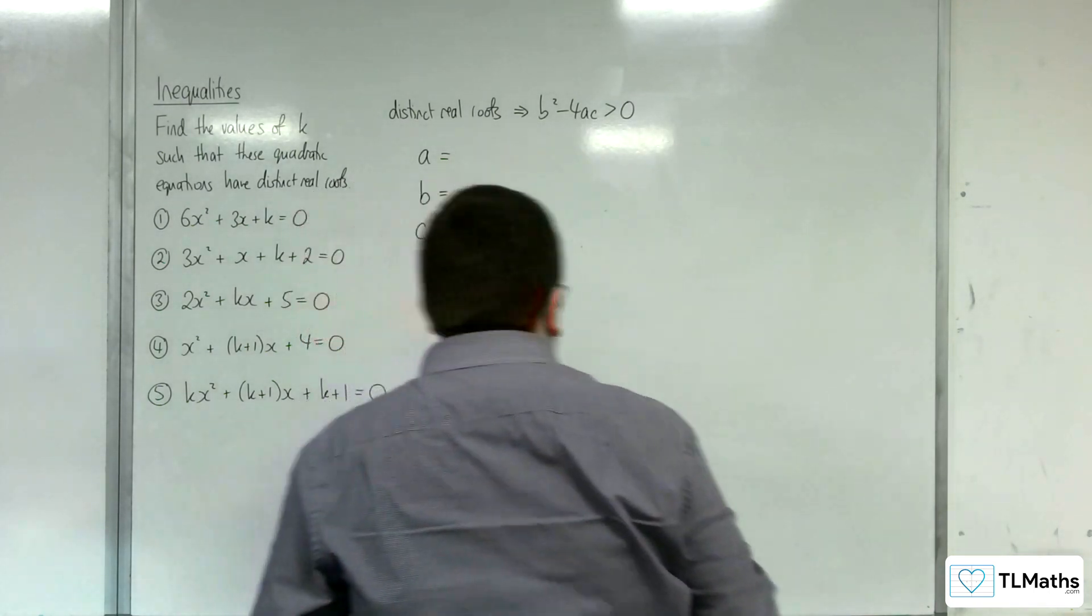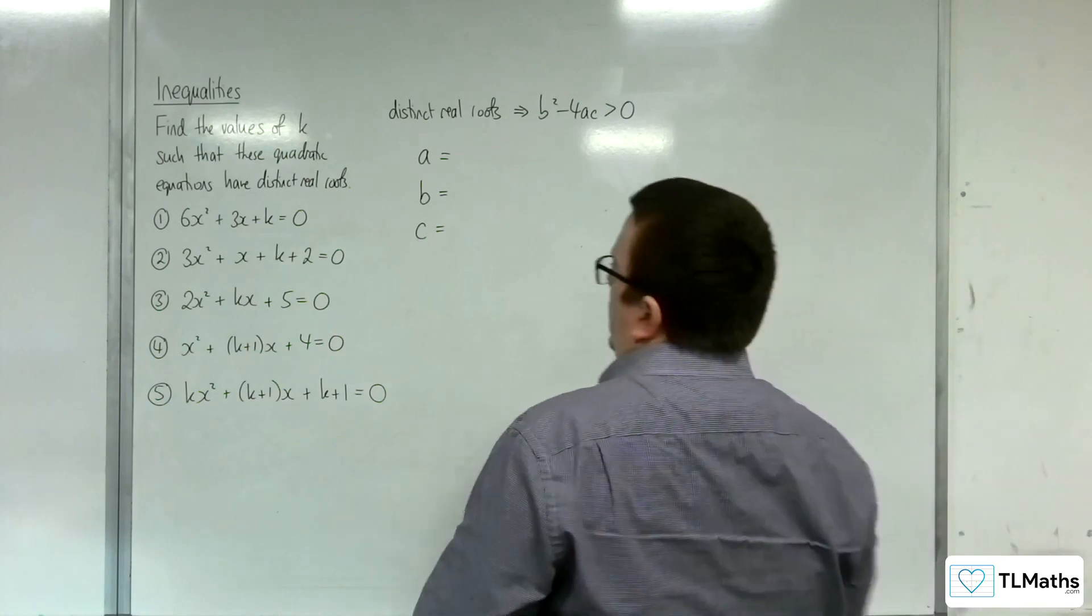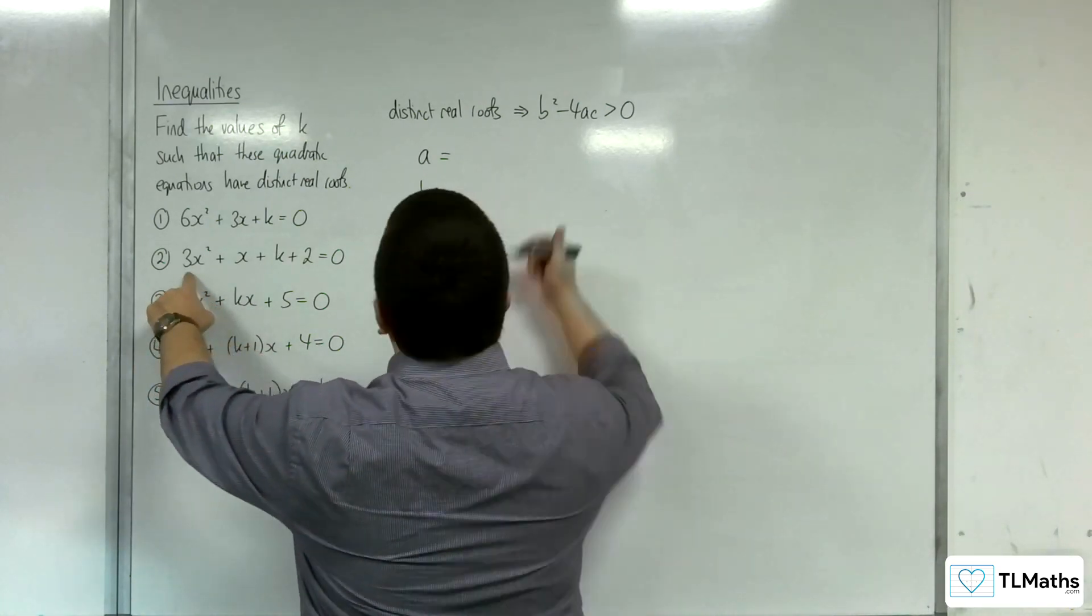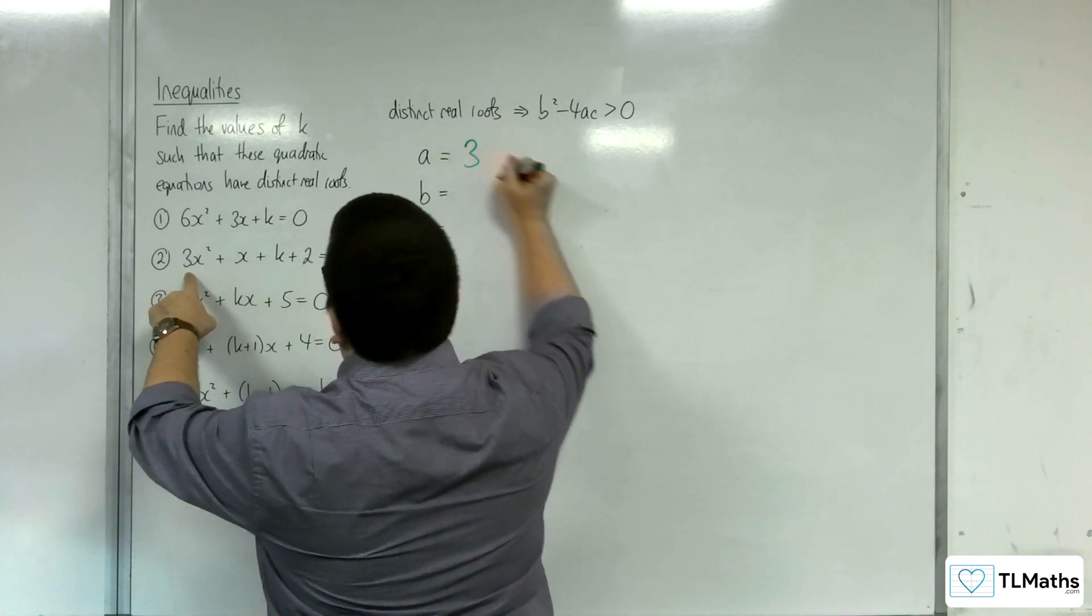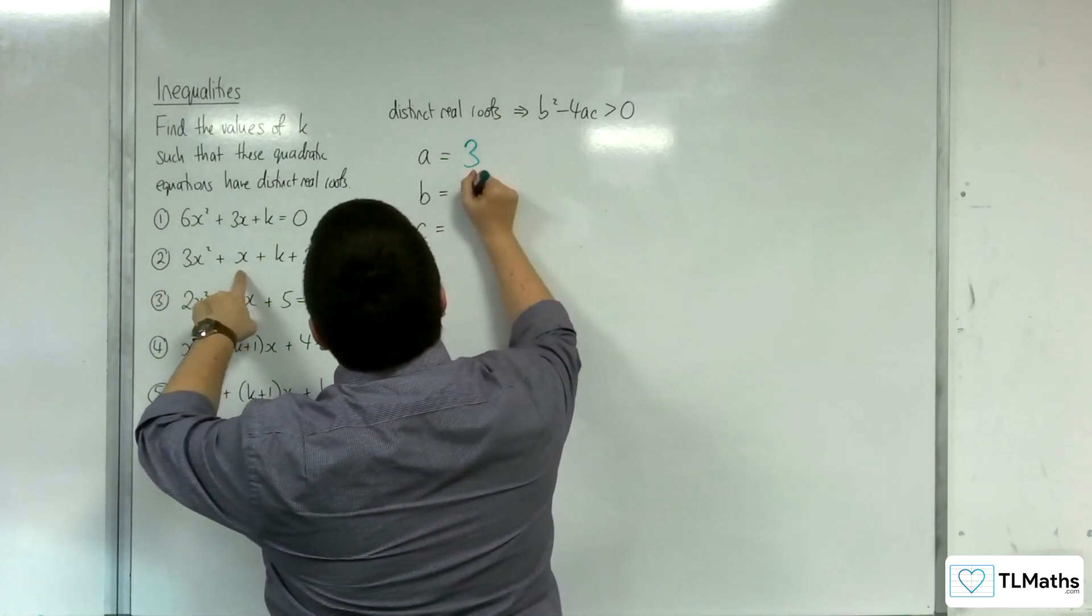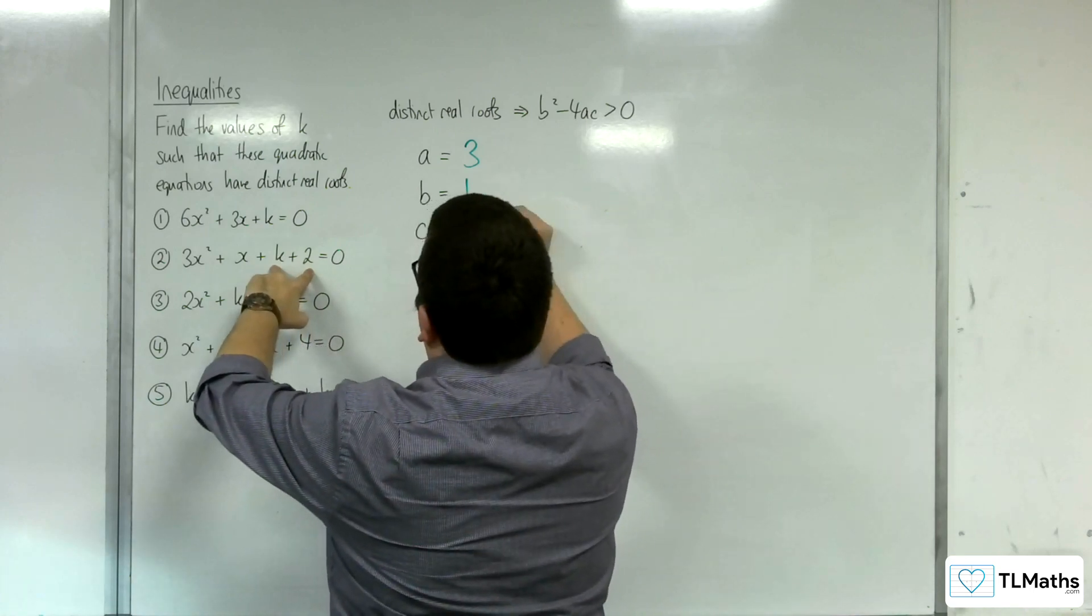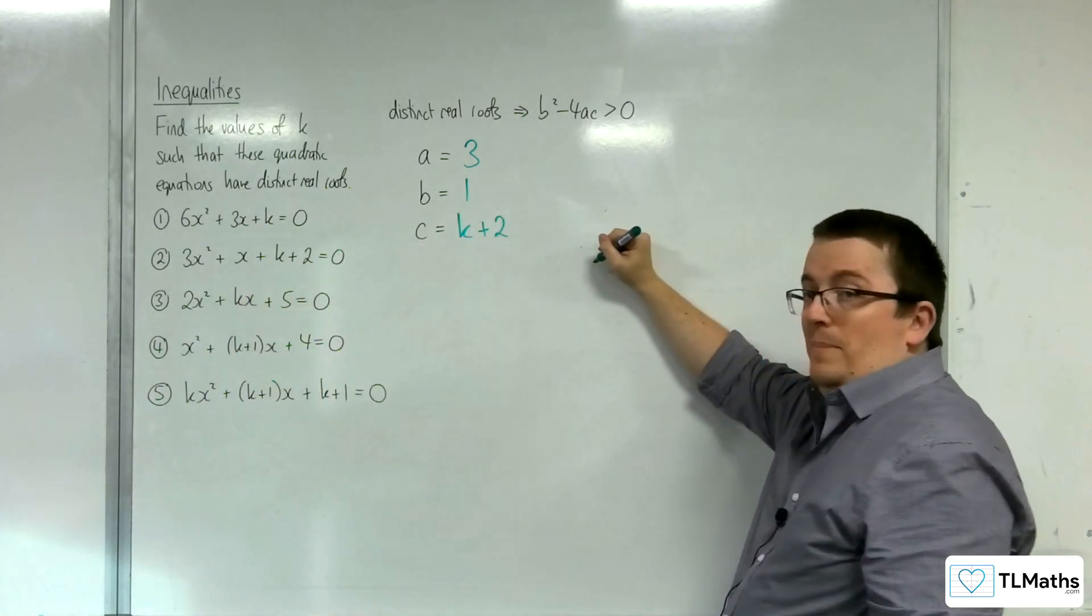Let's have a look at number 2. So number 2, a is the coefficient of x squared, so 3. b is the coefficient of x, so 1. And c is whatever is left over, the k plus 2. It's all of that bit there.